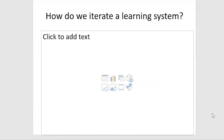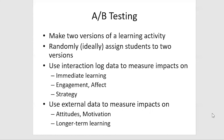So how do we iterate a learning system? One such approach is A-B testing, which became prominent in e-commerce before it became prominent in education, although folks like Jack Mostow were doing it 20 years ago. In A-B testing, we make two versions of a learning activity, randomly assign students to the two versions, and then compare what happens — using interaction log data to measure impacts on immediate learning, engagement, affect, and strategy. We can also use external data to measure impacts on attitudes, motivation, longer-term learning, and longer-term outcomes.